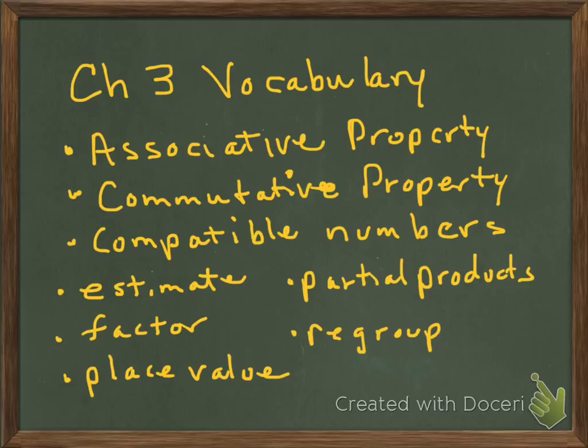Now before we go on let's make sure that we have a handle on the chapter 3 vocabulary. The first two are properties of multiplication. So we're going to talk about properties of multiplication. Compatible numbers, we'll talk about what those are and we'll work with those. Estimate, which is the verb, so we're going to be actually doing this. Partial products, which you've heard before. Factor, which I know that you know but we're going to keep working with that. The concept of regroup and of course we're going to continue to play with the concepts of place value and how they work for us as we're multiplying two-digit numbers.